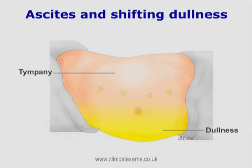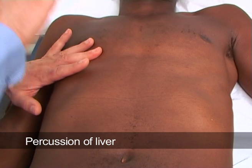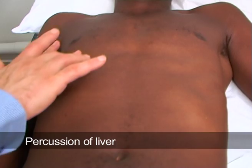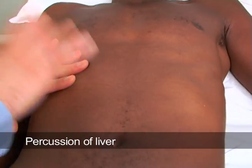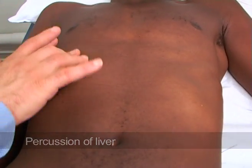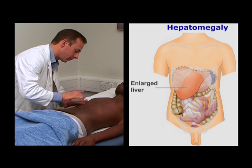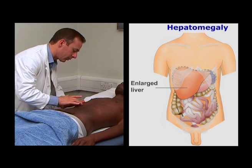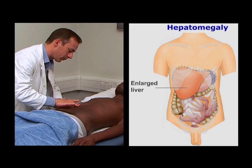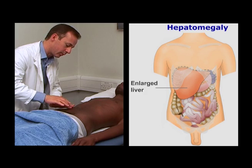The fluid would have shifted to the side the patient is lying on, and air travels to the top side. You can map out the size of the liver by percussing from the middle of the right thorax towards the right costal margin until you hear dullness from the underlying mass of the liver.